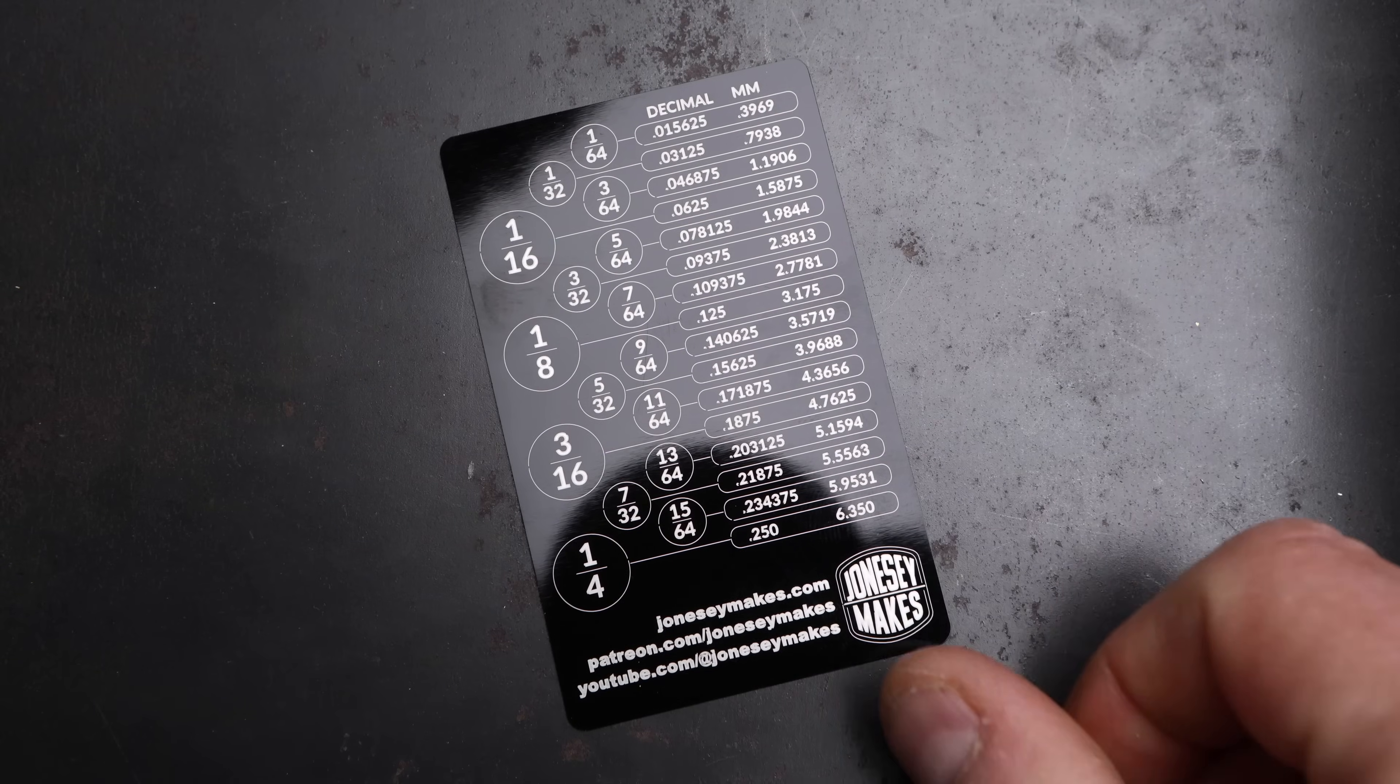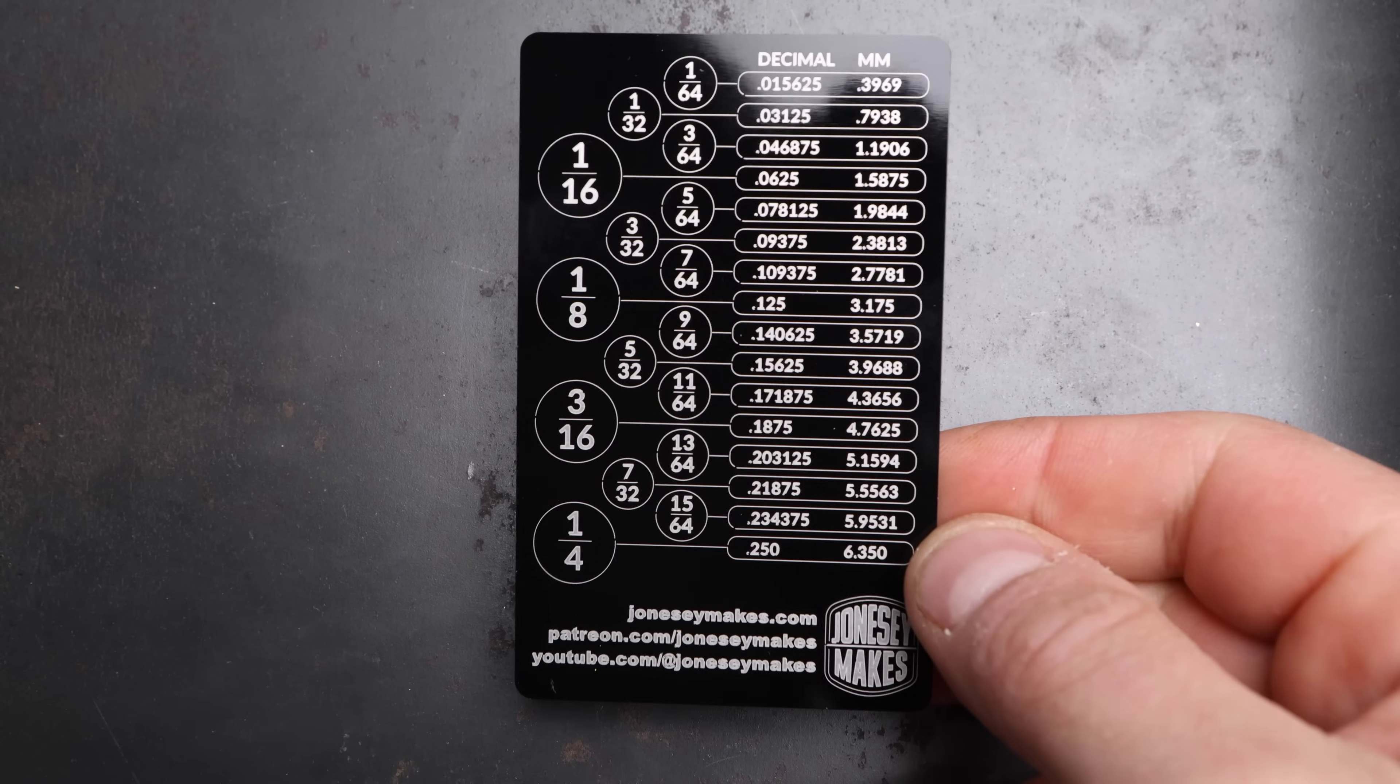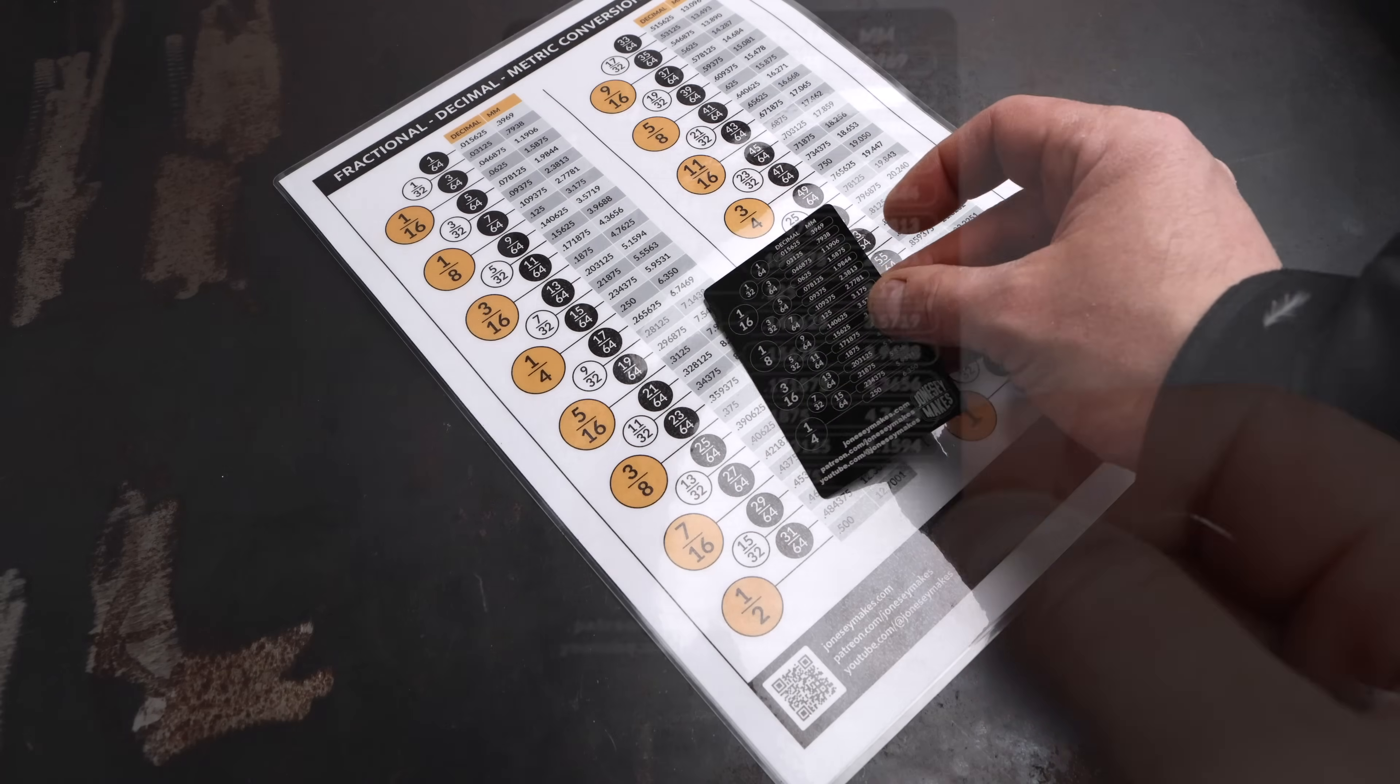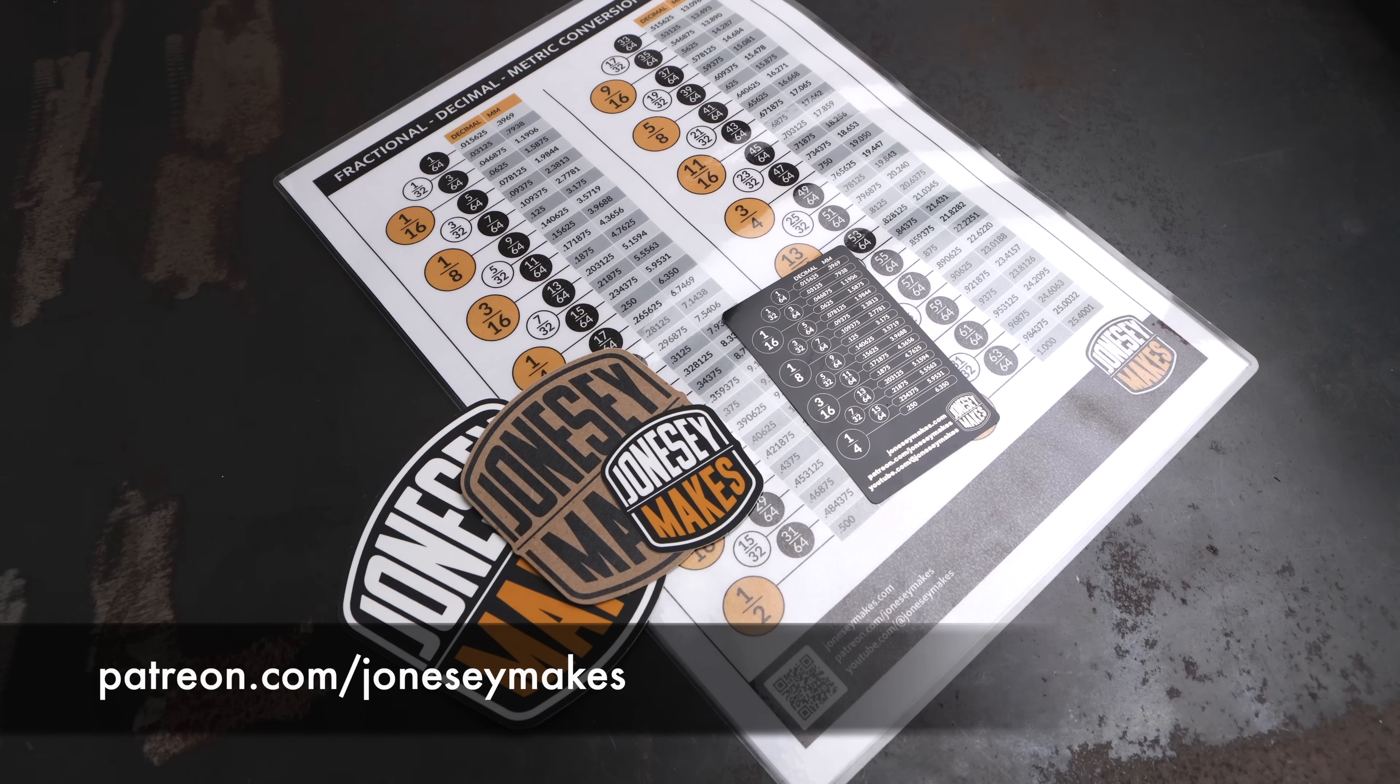And again, I'm really impressed with the way these have turned out. They're so clear. If you'd like to get your hands on one of these, I should be sending one of these out, along with a copy of the wall-mounted conversion chart and some stickers to anyone that supports me on Patreon at the mid-level and above. Links in the description below.